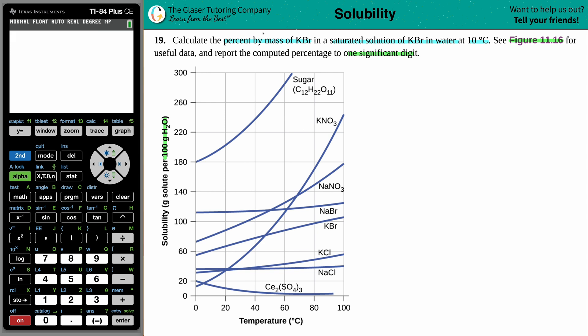So now we just want to find the percent by mass of KBR. So anytime that we're talking about a percent, a percent is always a part over a whole times 100. So maybe I'll just write that down. Any percent is part over a whole times 100.